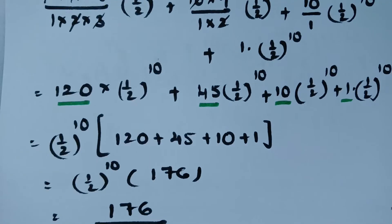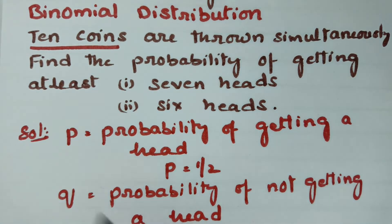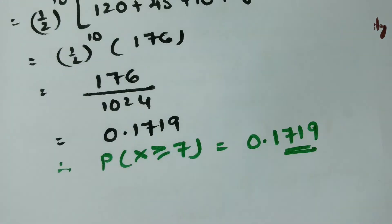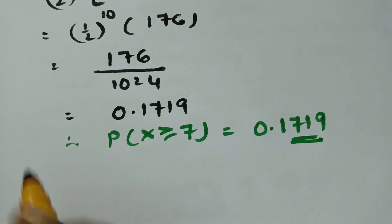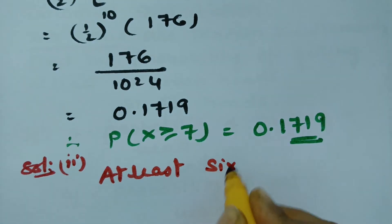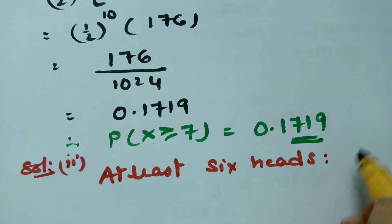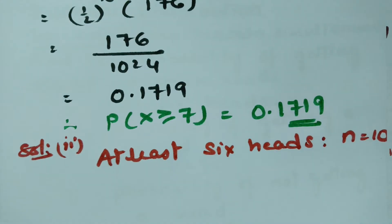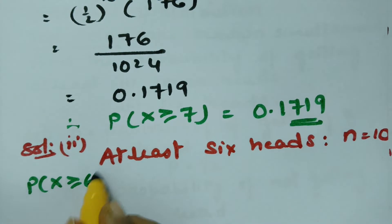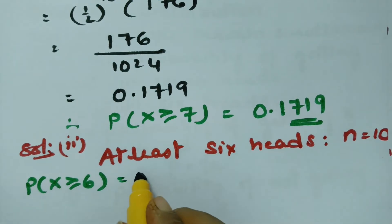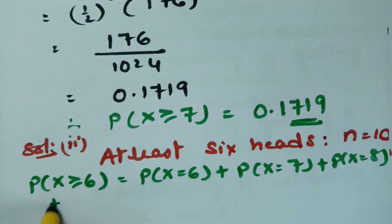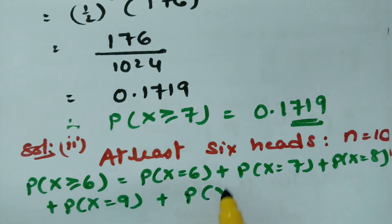The next question is also very clear. What is the probability of getting at least 6 heads when 10 coins are thrown simultaneously? Solution 2: at least 6 heads. At least 6 heads means minimum 6, maximum 10, so N equals 10. We need minimum 6 heads and maximum 10. Therefore, the probability of X greater than or equal to 6 equals probability of X equal to 6, plus 7, plus 8, plus 9, plus 10.